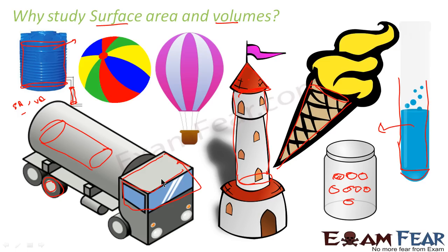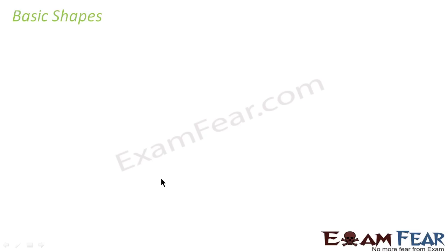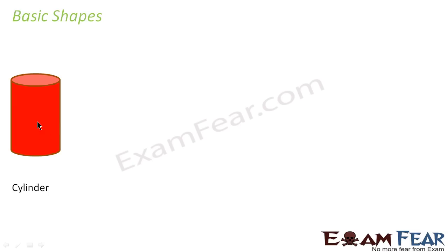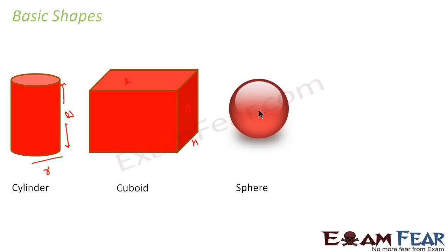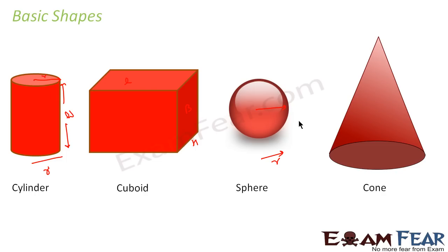Now let's start with the basic shapes. We have the cylinder — round in shape with a radius and height. The cuboid has length, breadth, and height. The sphere has only a radius. The cone has a radius and a height.